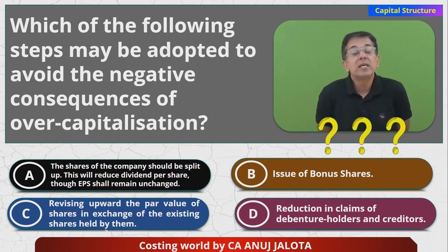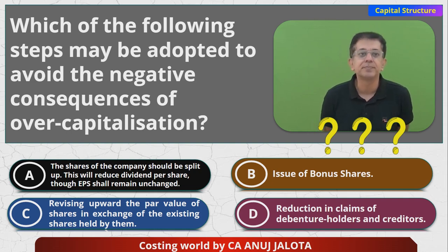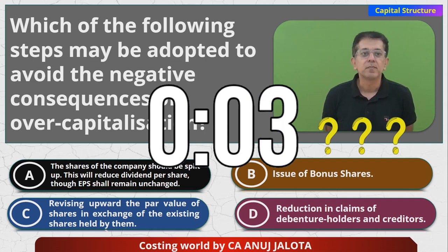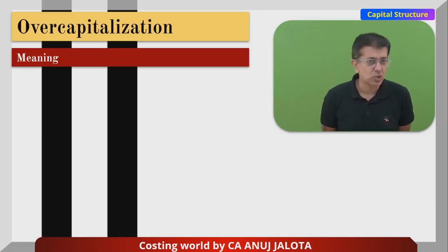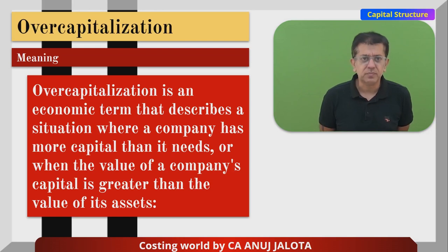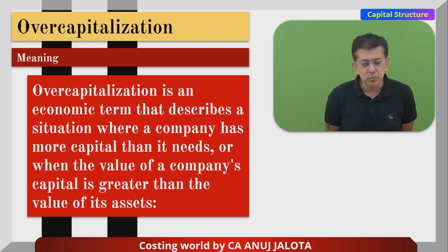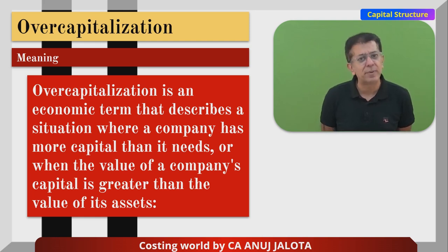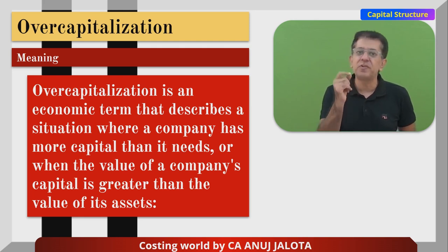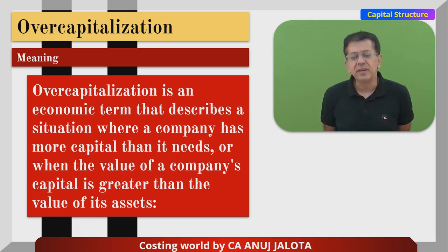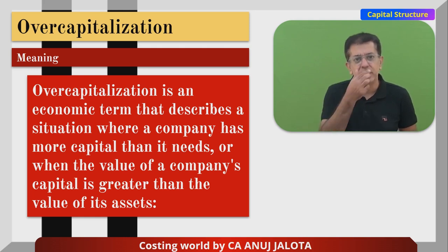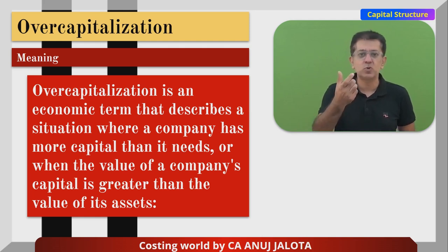First of all, what do you mean by over-capitalization? If you know the answer, this is the time to comment. Over-capitalization means a company has more capital than it needs. For example, a company did an IPO and raised 200 crores of capital, but for the business it only needed 1500 crores. The rest is just lying idle. Whether raised through equity or debt, that extra 500 crores is just lying on the asset side in the form of cash — not needed by the company. This is a situation of over-capitalization.